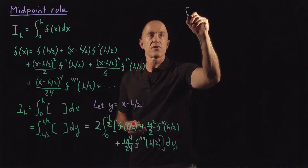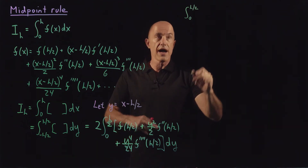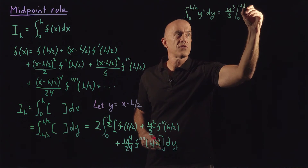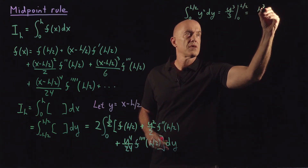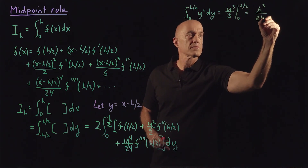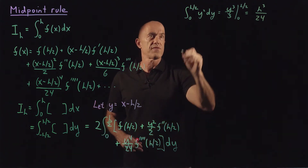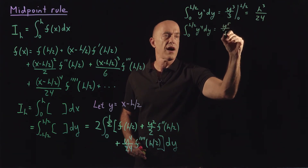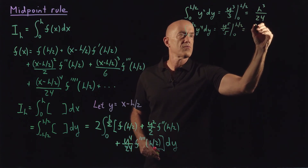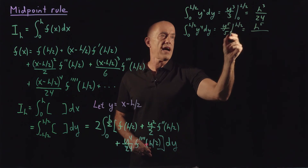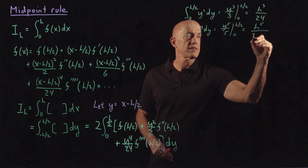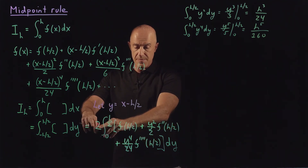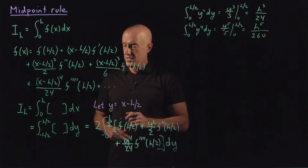We need some integrals. The integral from 0 to h over 2 of y squared dy equals y cubed over 3, evaluated from 0 to h over 2, which becomes h cubed divided by 24. The other integral we need is the integral from 0 to h over 2 of y to the fourth dy, which equals y to the fifth over 5, from 0 to h over 2, giving h to the fifth over 160. Then we multiply by 2, divide by 2, and divide by 24 to get our result.